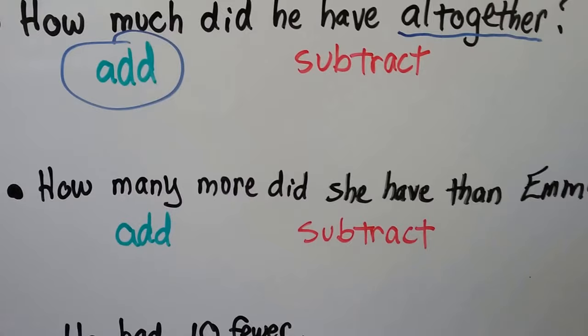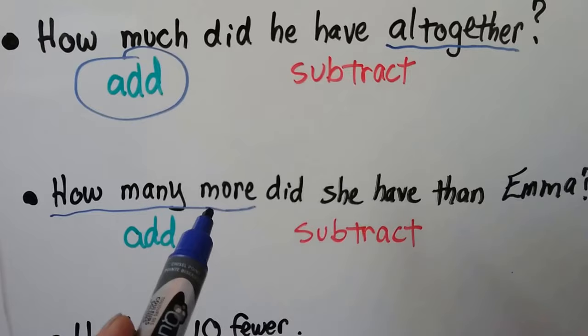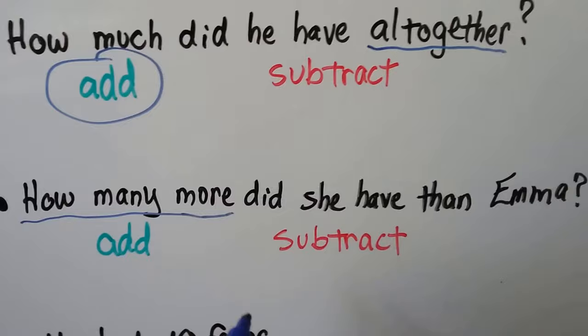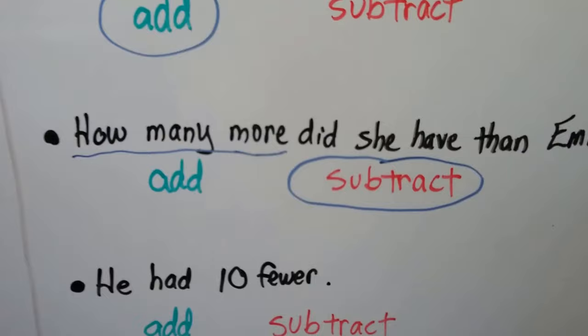'How many more did she have than Emma?' 'How many more' is a clue word that tells us we need to find a difference. There were two amounts and someone had more than Emma. That means we need to subtract to find the difference in the two amounts. 'How many more' is a clue word for subtraction.